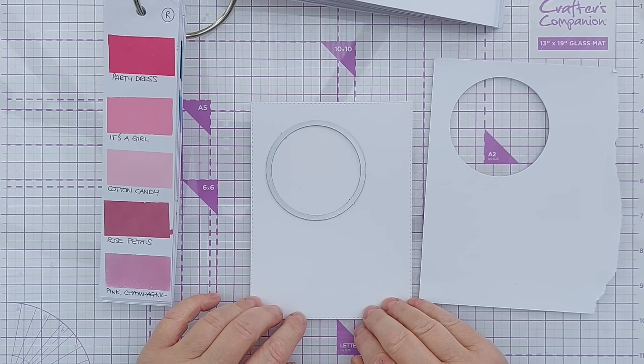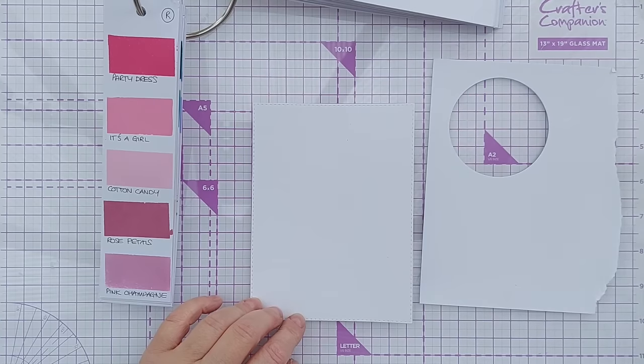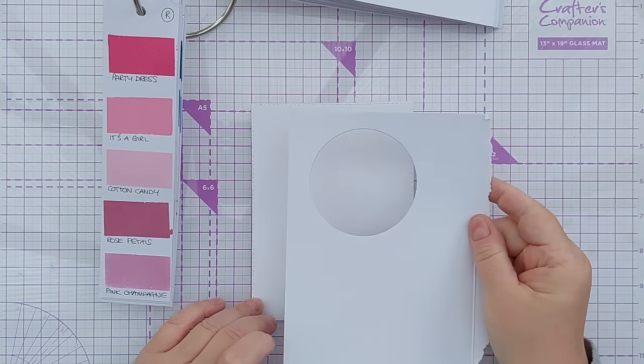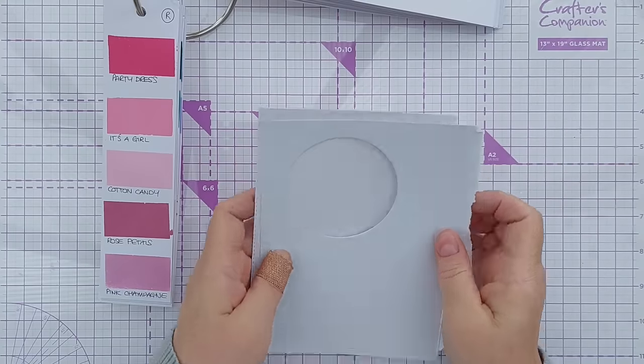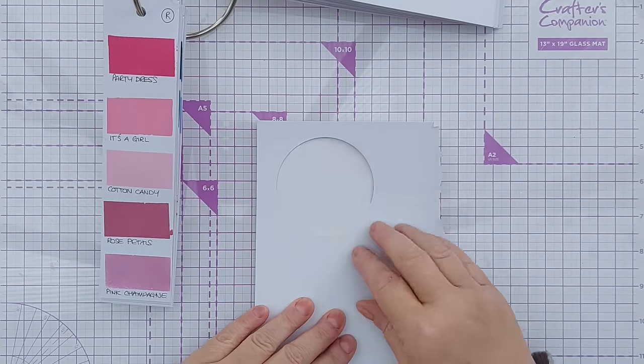I've got a panel of mixed media paper here and I've used this circle die to create this mask out of a scrap piece of paper because I want to blend onto my mixed media paper.